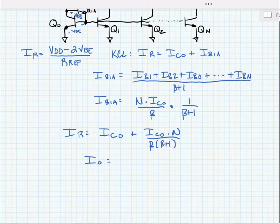Now, if we make a substitution and assume that all the output currents are equal, so in other words IC1 is equal to IC0 is equal to I0,